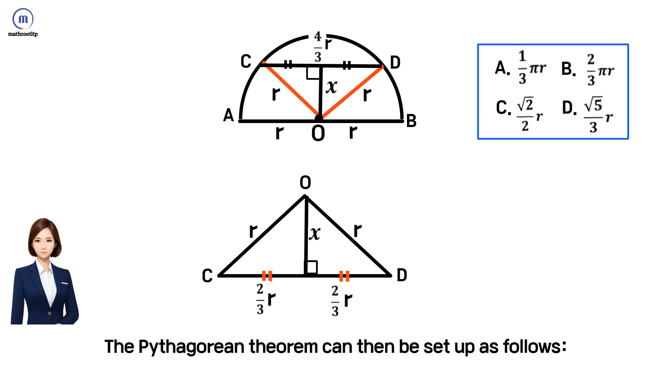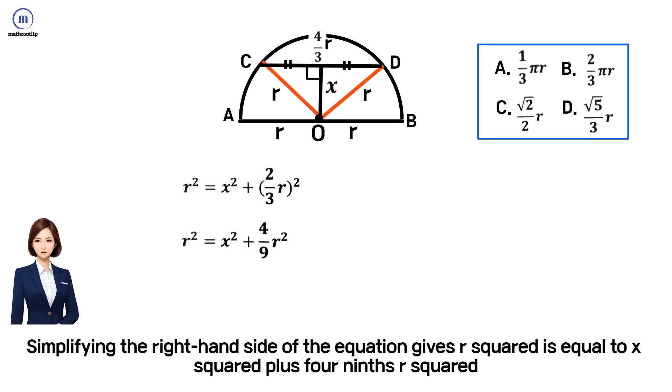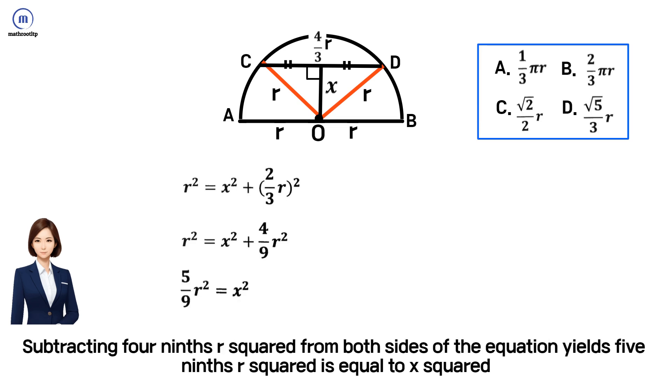The Pythagorean theorem can then be set up as follows: r-squared is equal to x-squared plus two-thirds r-squared. Simplifying the right-hand side gives r-squared equals x-squared plus four-ninths r-squared. Subtracting four-ninths r-squared from both sides yields five-ninths r-squared equals x-squared.